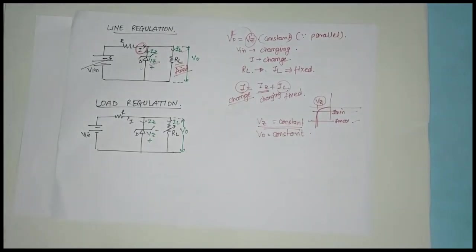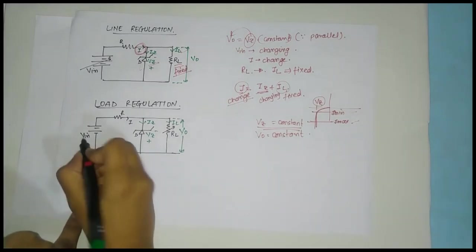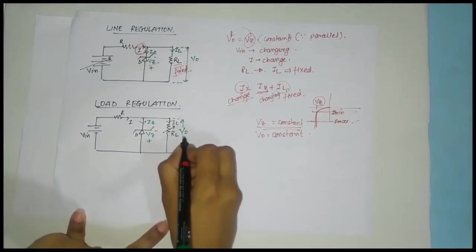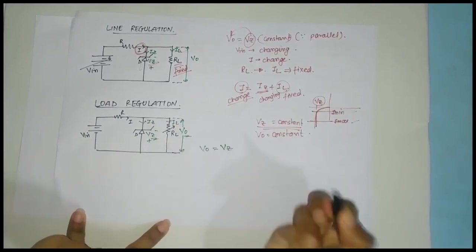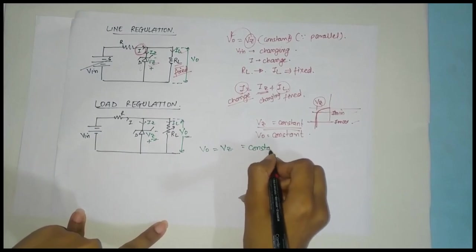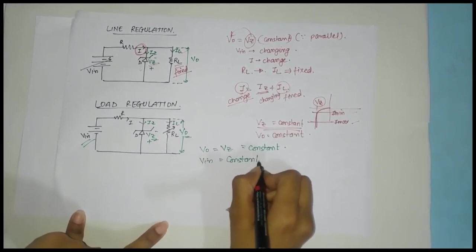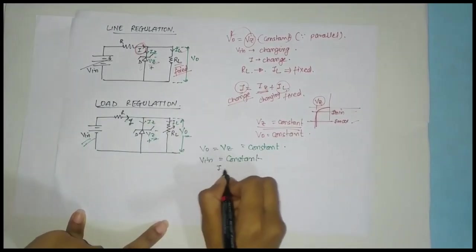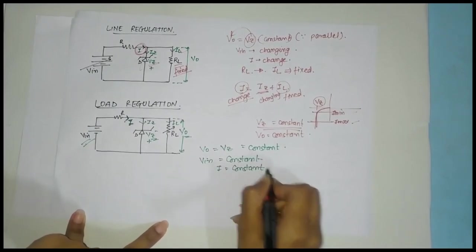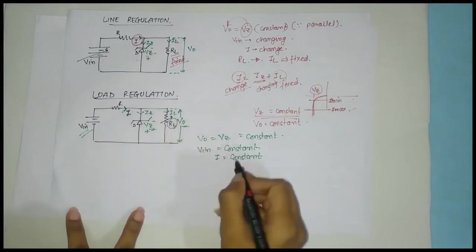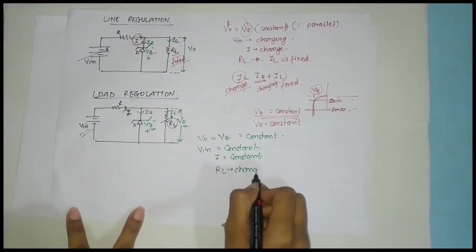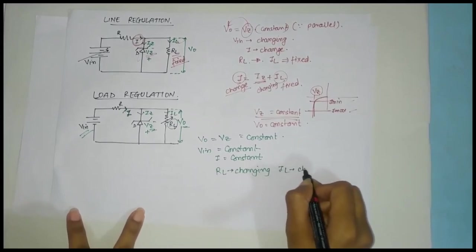Similarly, moving on to load regulation: here the value of RL is changing from no load to full load, while VIN is kept constant. Again, V-out will equal VZ since they are connected in parallel, and this should be our constant output — that is our aim. Since VIN is constant, the current I flowing through the series resistance will also be constant. However, since RL is changing, the current through it, IL, will also vary.